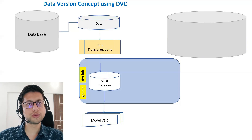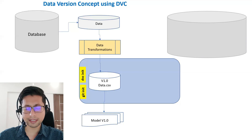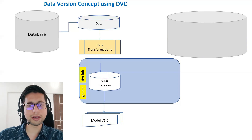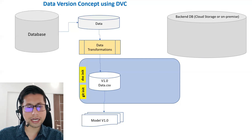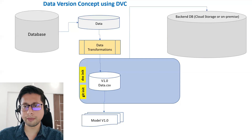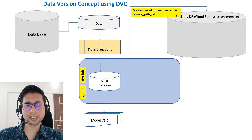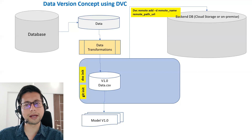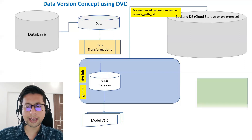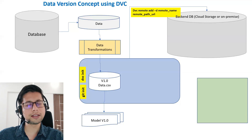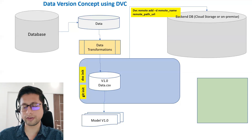Let's understand this with an architecture diagram. We have a backend DB — it could be cloud storage or on-premises. To integrate it, from your working directory run: dvc remote add -d [remote-name] [remote-path-url]. If it's a GCS bucket you provide the GCS path URL; for AWS S3 or any other backend storage you provide accordingly. All pointer reference files and metadata files will be stored in git since they are small files.